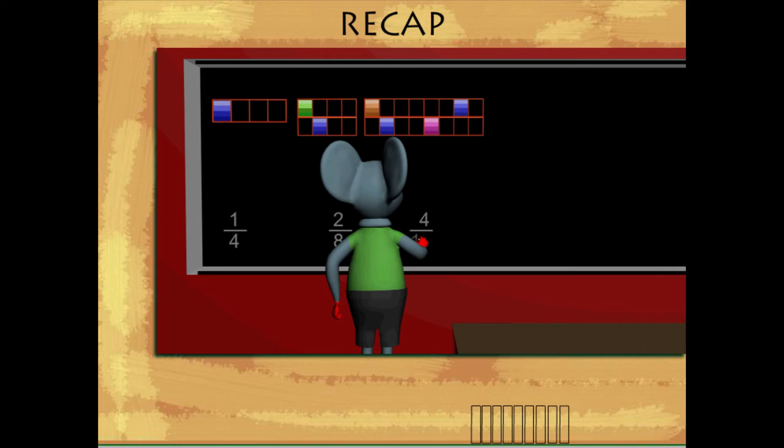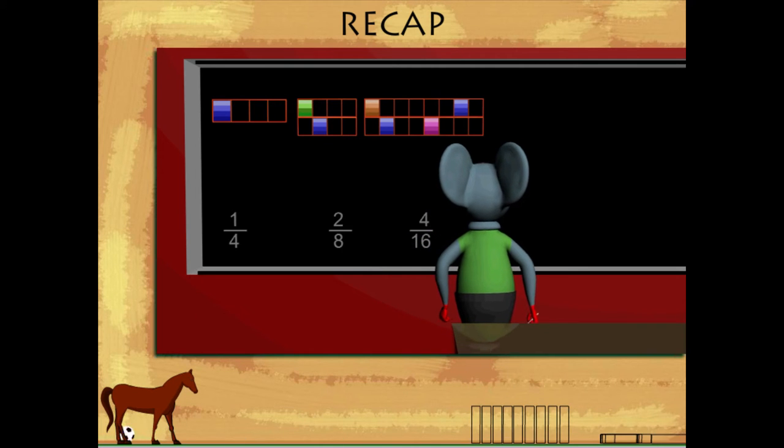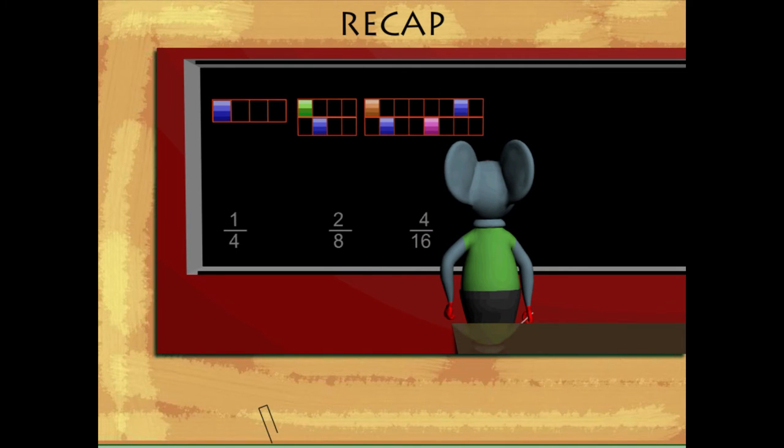All these fractions are equal because two by eight and four by sixteen are equal to one by four.